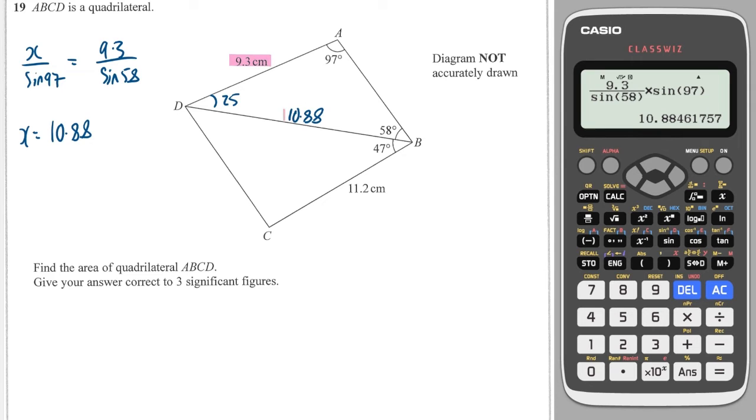Now I know 10.88 I can work out the area of both triangles because all you need to work out the area of a triangle is two sides and the angle in between them. So that's a half times 9.3 times 10.88 times by sine of 25. That's the formula which is given in your formula sheet. So we will do a half times 9.3 times by the previous answer times by sine of 25 and this will give us 21.39.